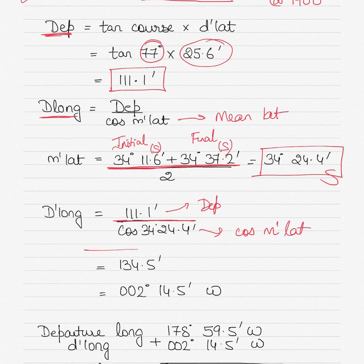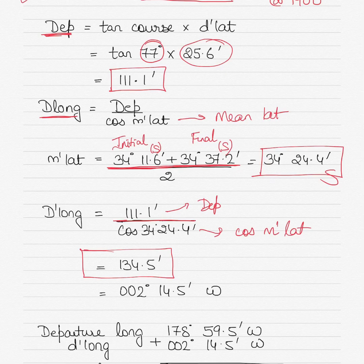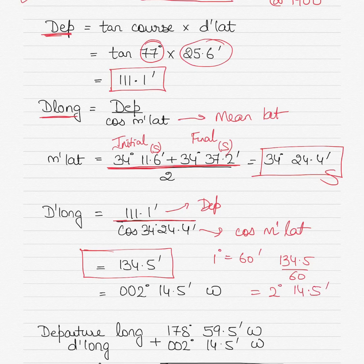Substituting the values gives D-long as 134.5. This is not 134.5 degrees — it is 134.5 minutes. Converting: 134.5 divided by 60 gives 2 degrees and 14.5 minutes remaining. So D-long equals 2 degrees 14.5 minutes.